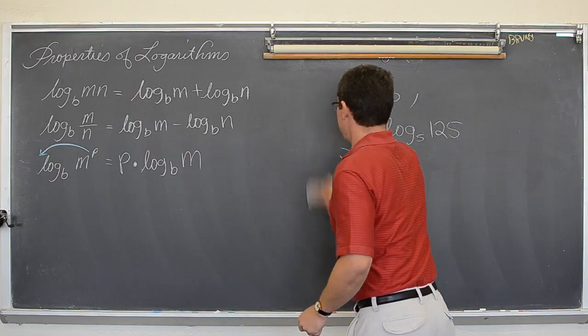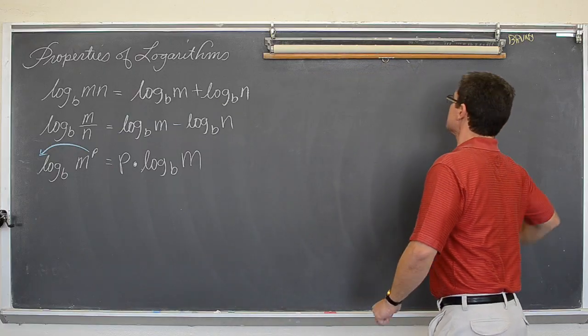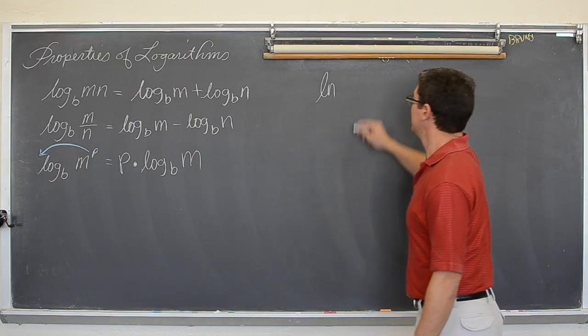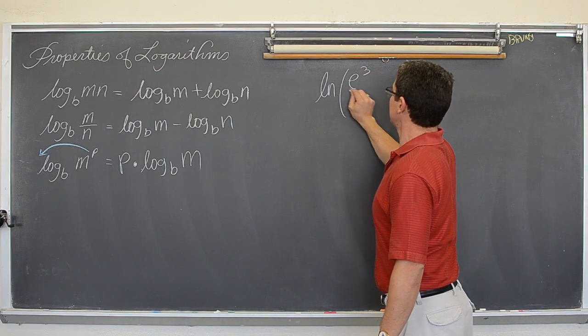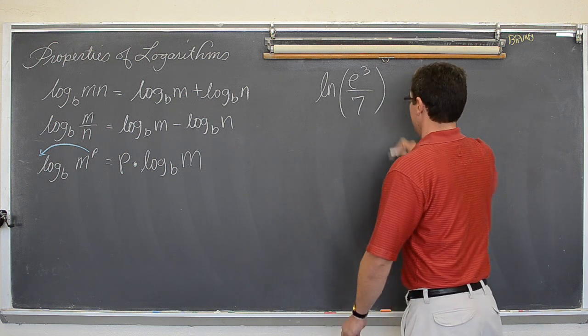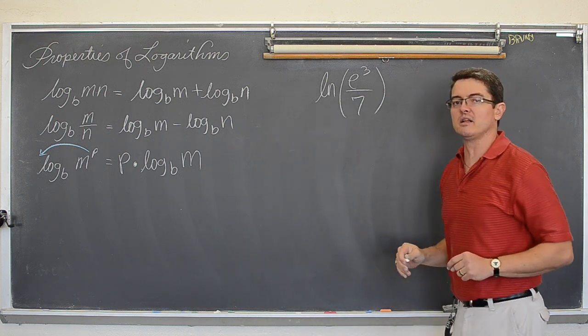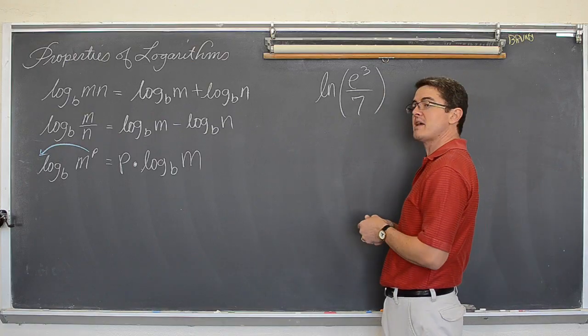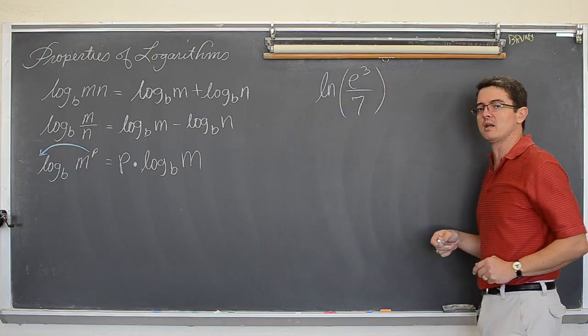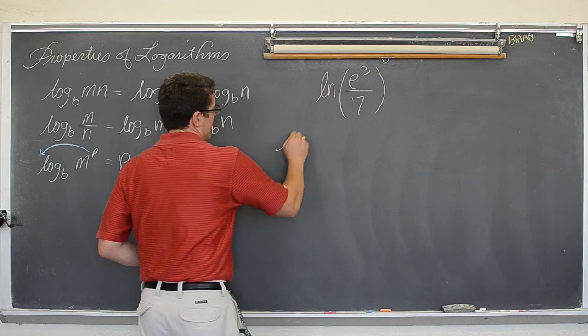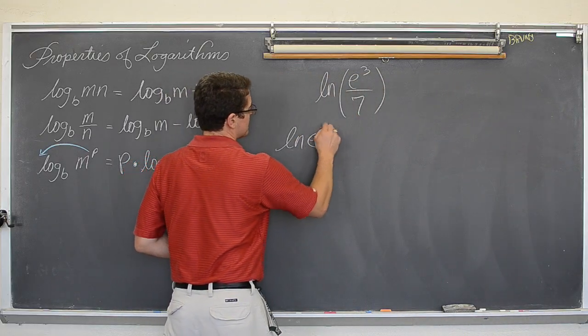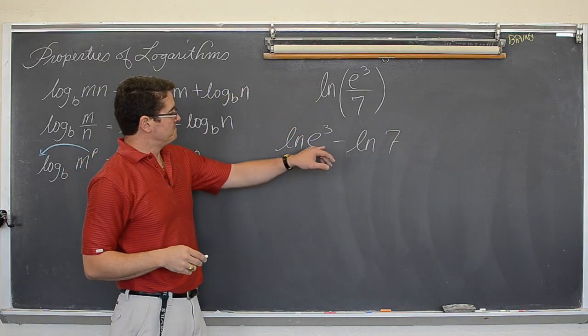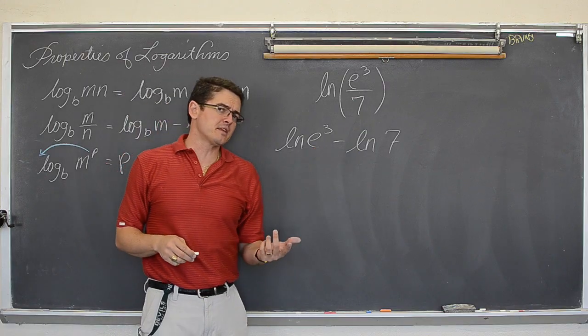I have not done any natural logs yet. So let's take a look at that. We have got the natural log of e to the third over seven. Don't be freaked out by this little ln. That is just another notation. It is shorthand for log base e. I will expand that out just as a teaching tool here in a second. But again, first I want to split up that division. So we have got natural log of e to the third minus natural log of seven.